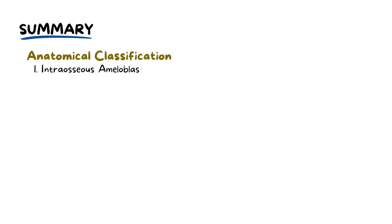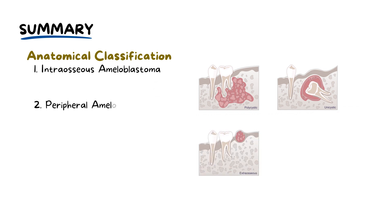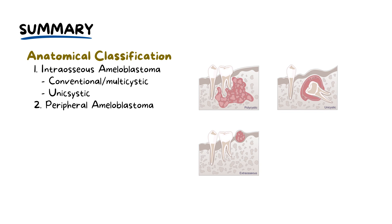There are two main anatomical classifications. Intraosseous ameloblastomas develop within the bone and are typically more aggressive. Peripheral, or extraosseous ameloblastomas, form in the soft tissues overlying the gingiva or alveolar mucosa, and are relatively less common and less aggressive. Intraosseous ameloblastomas can be further subdivided into conventional and unicystic types.